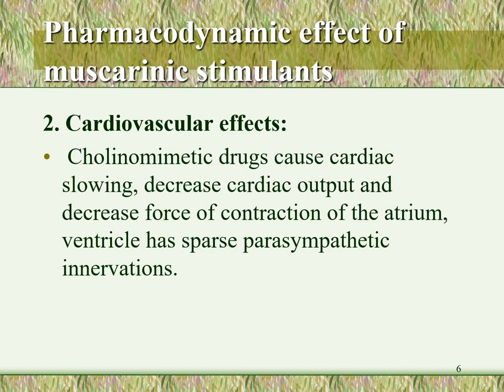Pharmacodynamic effects of muscarinic stimulants on the cardiovascular system: cholinomimetic drugs act on M2 receptors on the heart, leading to slowing of heart rate and decreased cardiac output. M2 receptors are inhibitory, acting through inhibition of adenylate cyclase, leading to decreased cyclic AMP, decreased calcium, and thus decreased force of contraction and slowing of the heart. This effect occurs mainly on the atrium, while the ventricle has sparse parasympathetic innervation compared to the atrium.